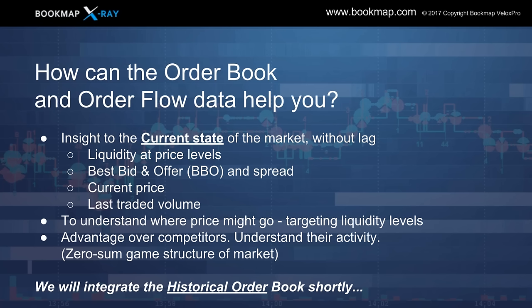How can order book and order flow data help you? The current state of the market — any DOM will do this — has no lag. It shows you liquidity at price levels, gives you the best bid and offer and spread, current price, and last traded volume. It gives you an understanding of where price might go by targeting high liquidity in the depth of market on the bid or the offer. This gives you an advantage over the competition because you can start to understand their activity. Recall that this is a zero-sum game structure within the marketplace.